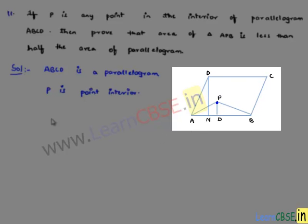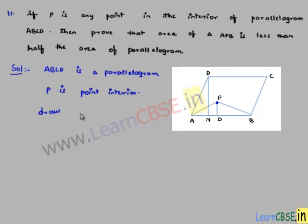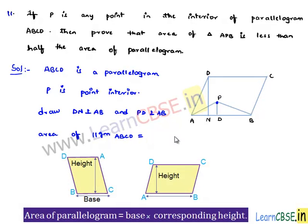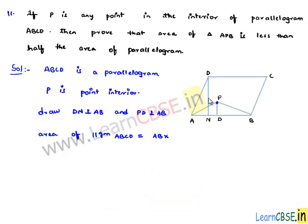So in order to prove that, let us draw DN perpendicular to AB and PD perpendicular to AB. Now, we know the formula for area of parallelogram ABCD, that is equal to base into corresponding height. Here let us consider the base as AB into the corresponding height DN, as it is perpendicular to AB.